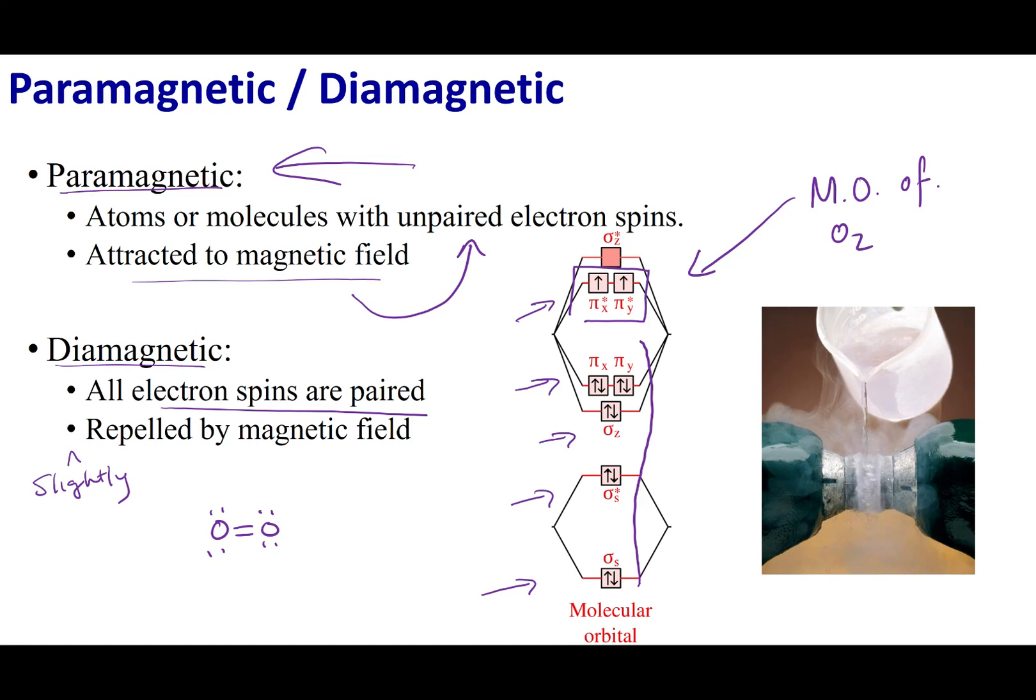Now, if you were to go ahead and liquefy oxygen, so this is liquid O2, what you can do is you can pour liquid oxygen in between two permanent magnets. And what you will see is that this liquid is magnetic and is going to be suspended in air. So what this shows is molecular orbital theory is doing a better job describing our natural world. It predicted that oxygen would have unpaired electrons and thus be paramagnetic, attracted to a magnetic field.